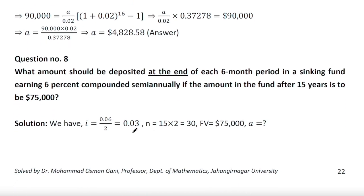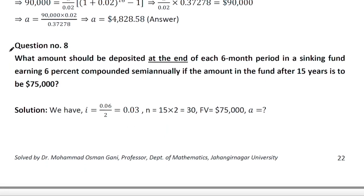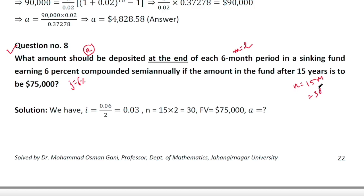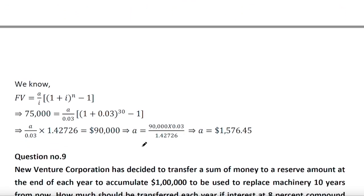Next problem: What amount should be deposited at the end of each 6-month period in a sinking fund earning 6% compounded semi-annually, if the amount in the fund after 15 years is to reach a specified future value? Since it is semi-annual, m = 2, j = 6%, and n = 15 × 2 = 30. You can solve this problem yourself using the same future value formula.